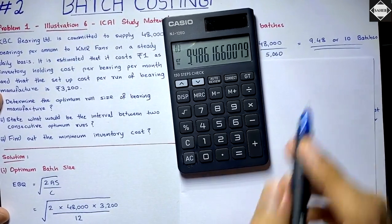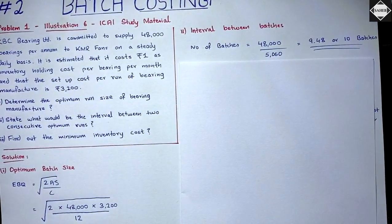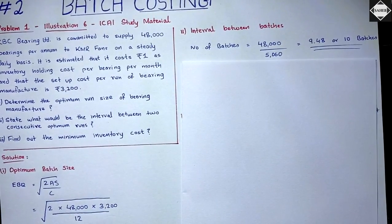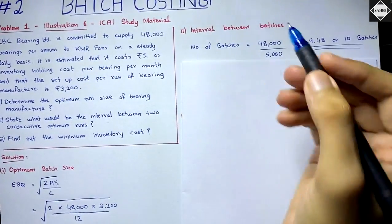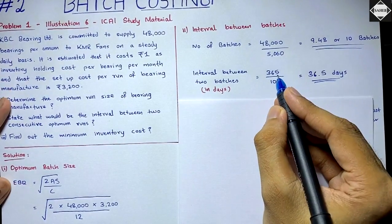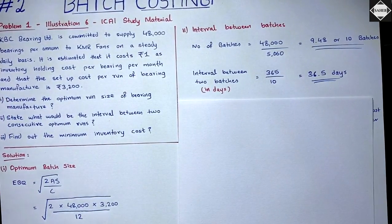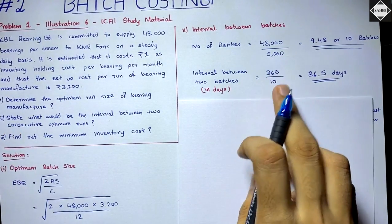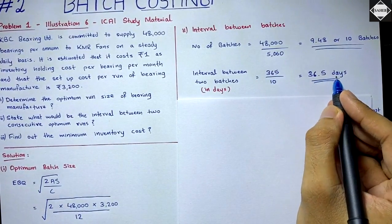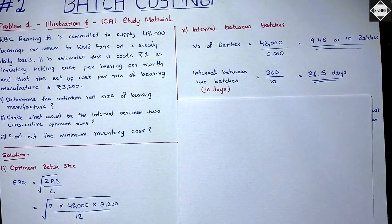We round this off to 10 batches per year to meet the annual demand of 48,000 units. Now to find the period between two batches: there are 365 days in a year, divided by 10 batches = 36.5 days, which we can say is approximately 37 days between two consecutive batches.